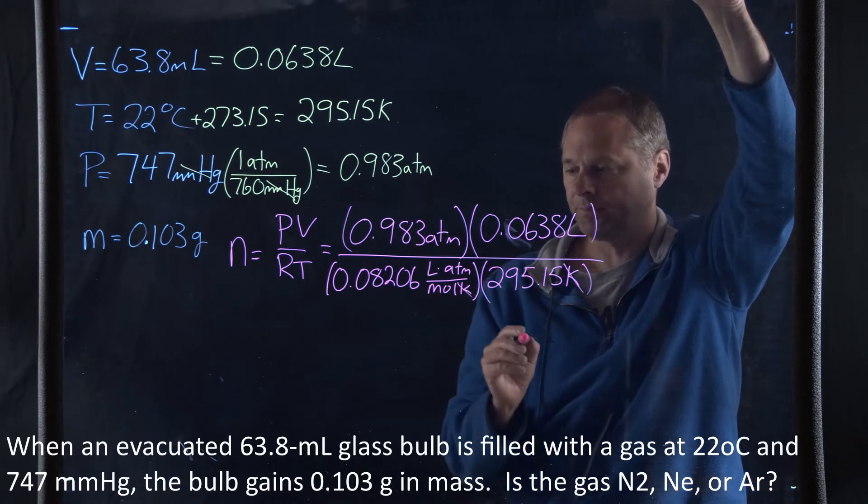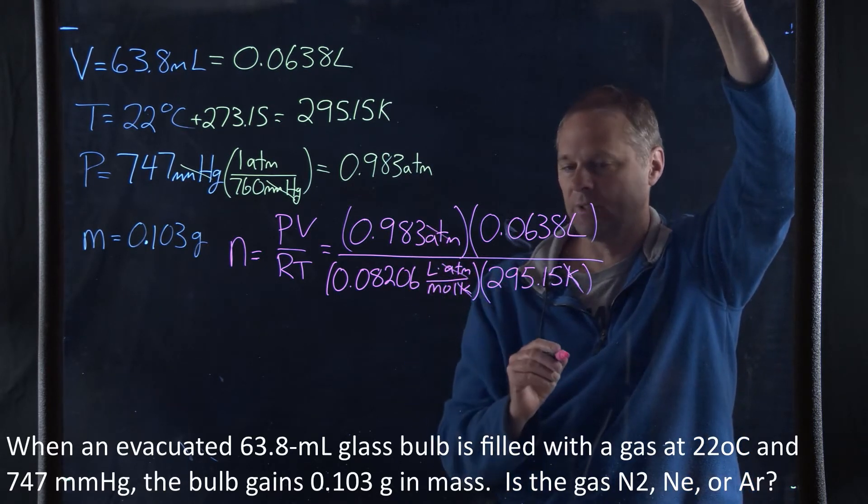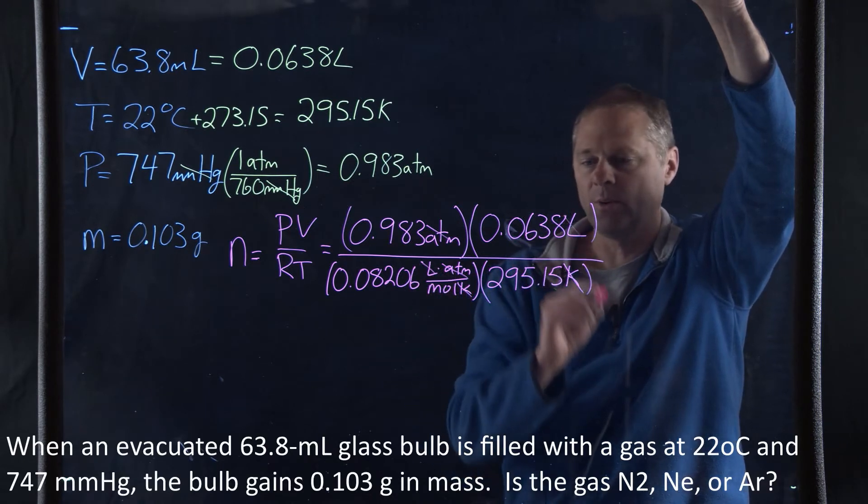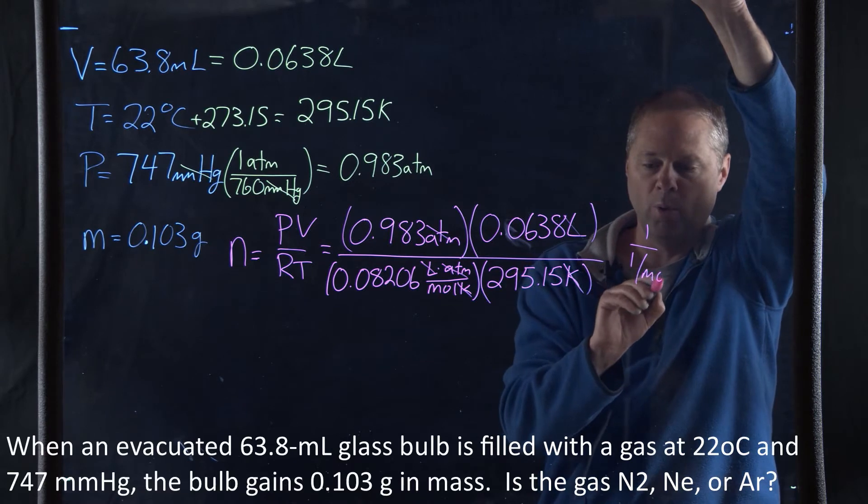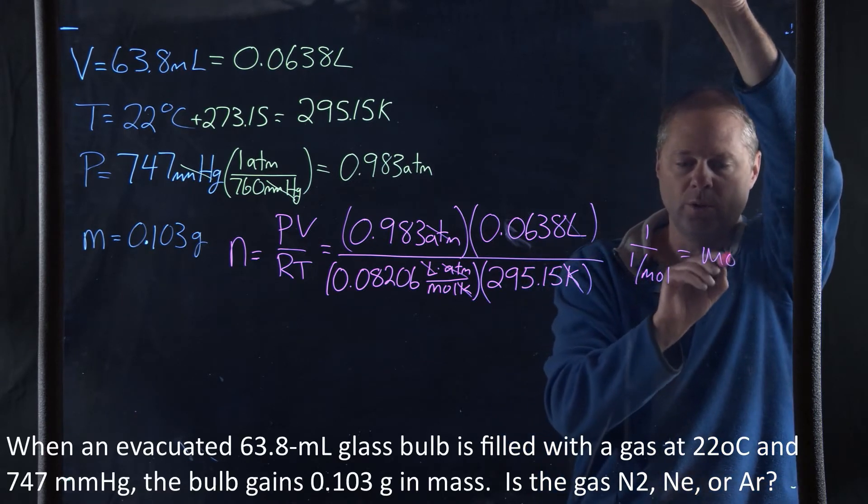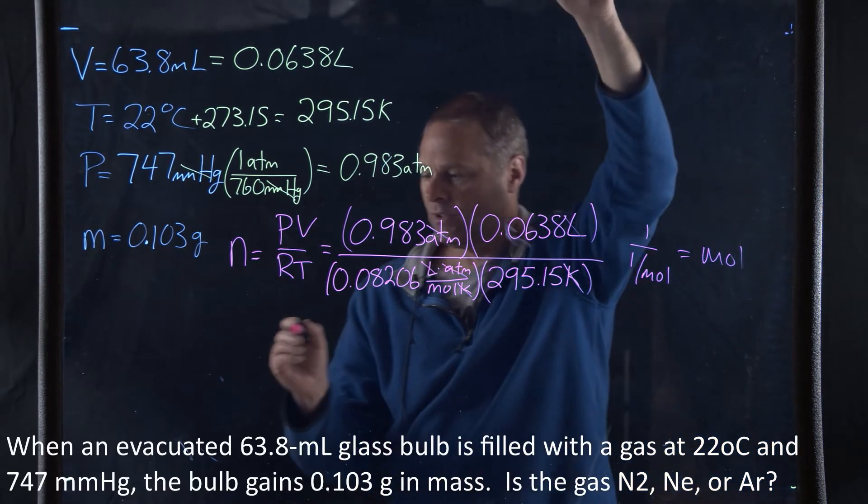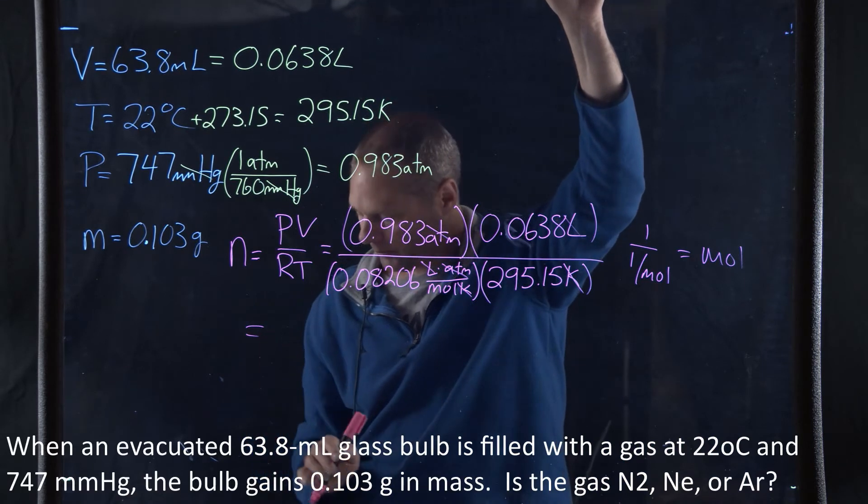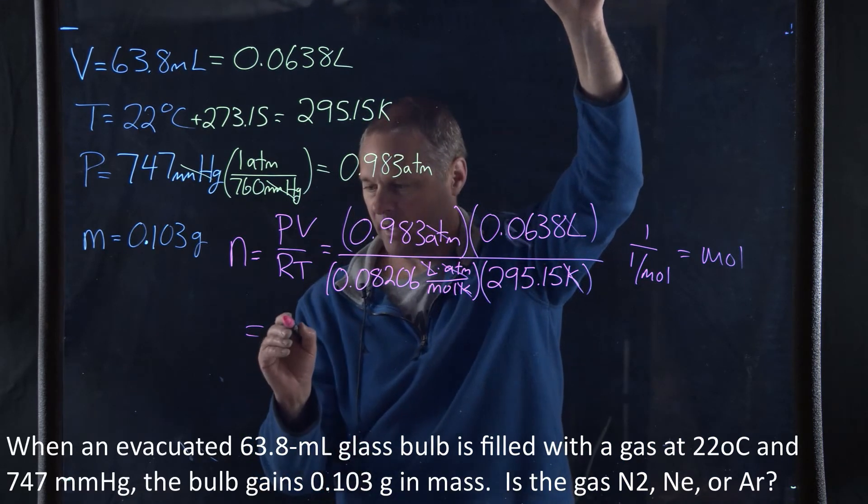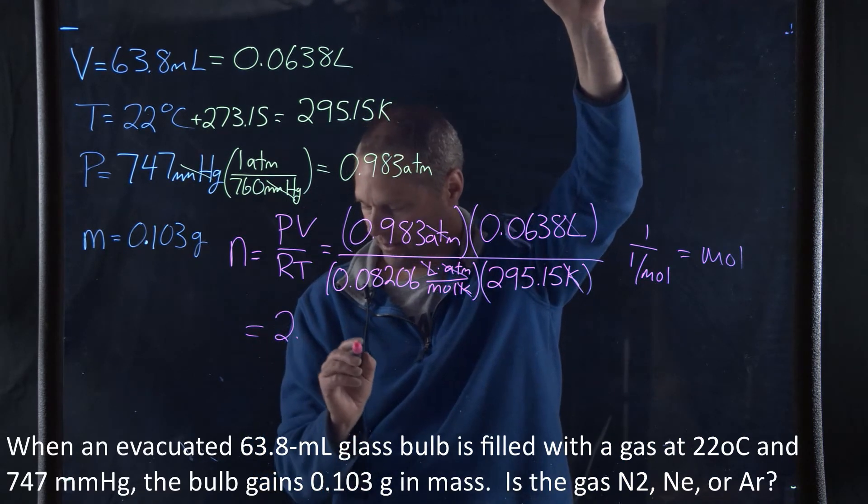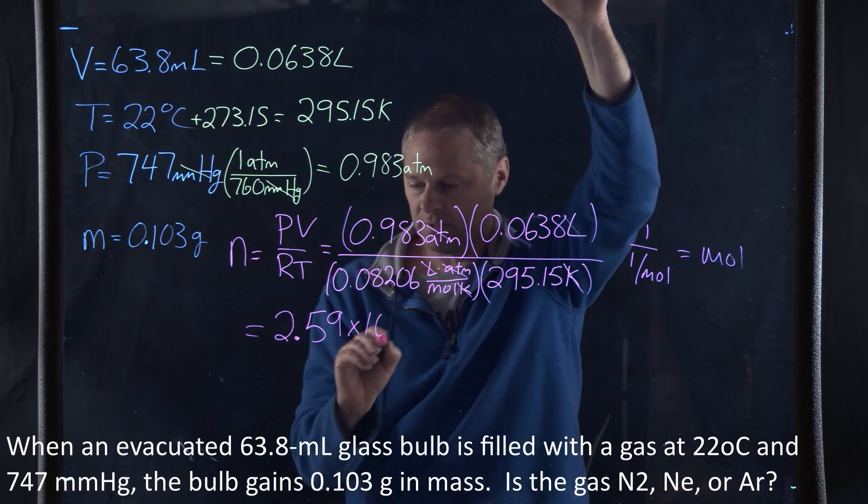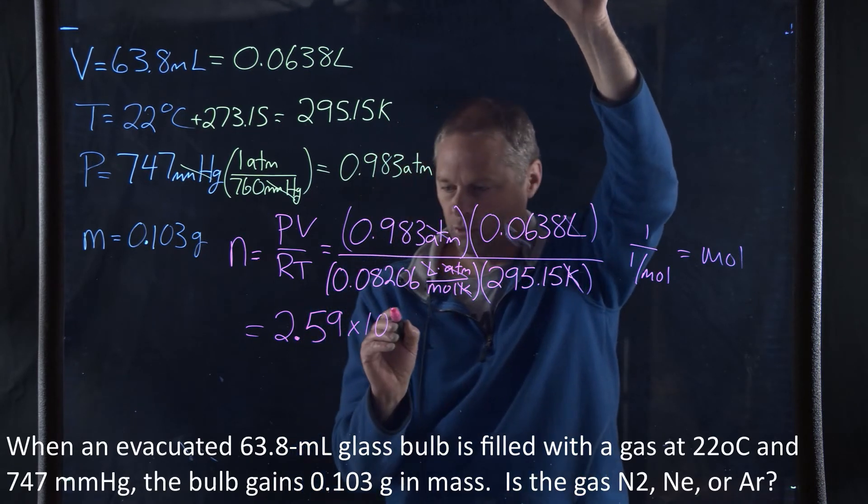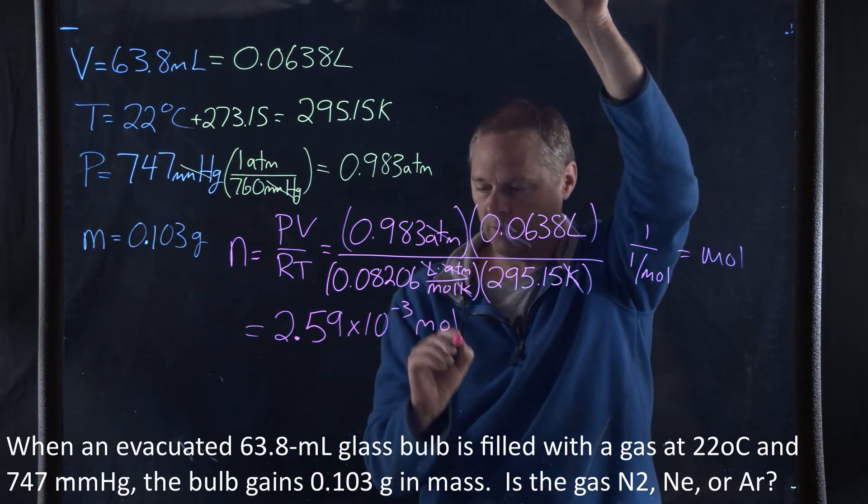Now, the Kelvins are going to cancel. The atmospheres are going to cancel. The liters are going to cancel, and we're going to end up with units of mole. When we do this arithmetic, the number of moles that we calculate is 2.59 times 10 to the negative third of a mole.